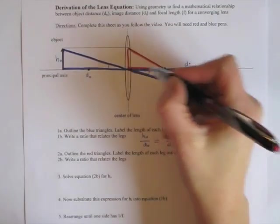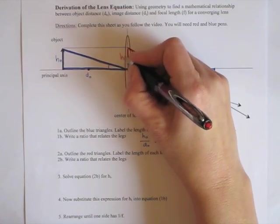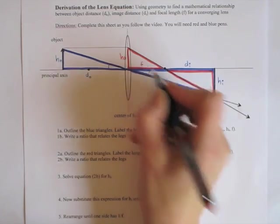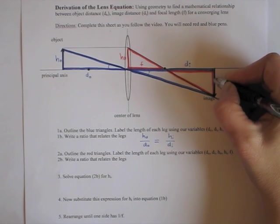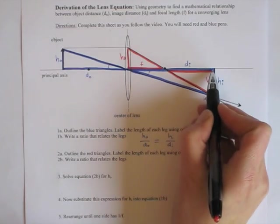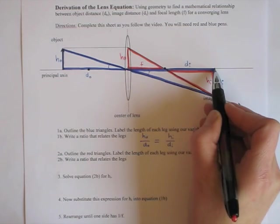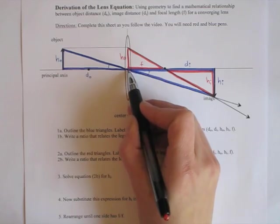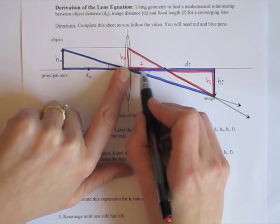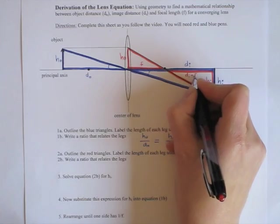Pause the video and see if you can label the length of the leg of each of those triangles. The lengths of the legs are: this leg is the object height, this distance is the focal length. In this triangle, the vertical height is the image height again. And this distance, it's not DI because DI is the total distance from the center of the lens to the image. It's not F, because that's only from here to here. What it is, is the image distance minus this piece, minus the focal length. So this segment is DI minus F.